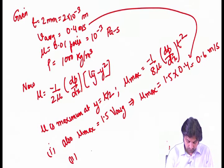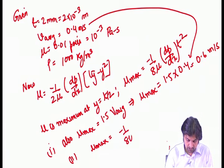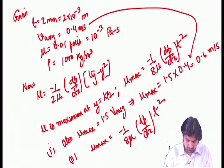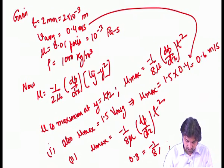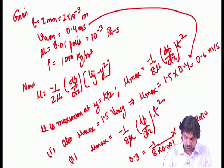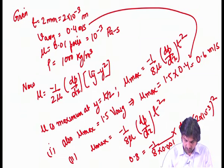For the second part, u_max is also written as minus 1/(8μ) · (dp/dx) · t². Substituting u_max = 0.6, and the values mu = 0.001 and t = 2×10⁻³ meters into this equation, we can obtain dp/dx equal to minus 1200 Newton per meter square per meter.